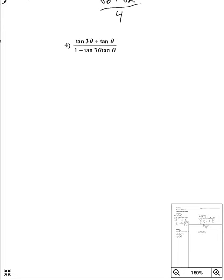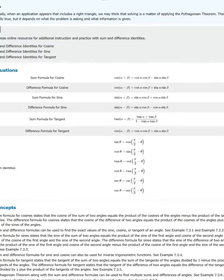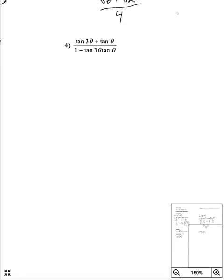For the last one on this page, we've got tangent plus tangent over 1 minus tangent tangent. If you recall, this is another one of these identities — it's tangent of a plus b. So this is going to be tangent of 3θ plus θ, because 3θ is our first angle and θ is our second angle. We add them together and get tangent of 4θ as our answer. That's our first page — moving on.